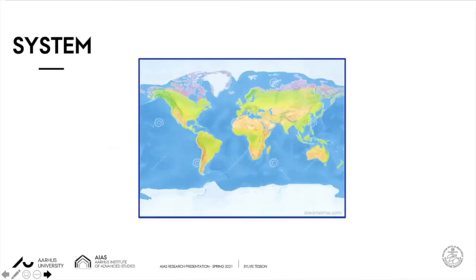Our blue planet is covered by 71% of water, which is an essential element to life. Water is visible under the form of ice, oceans, rivers, lakes, precipitation such as rain and snow, but also under more subtle forms such as groundwater,